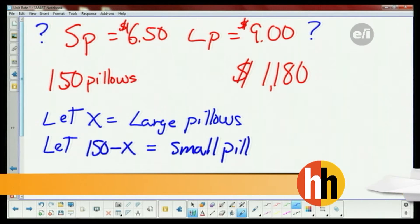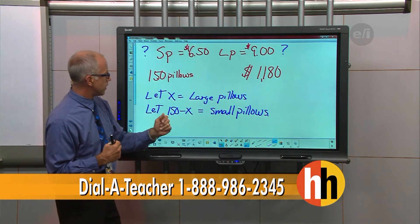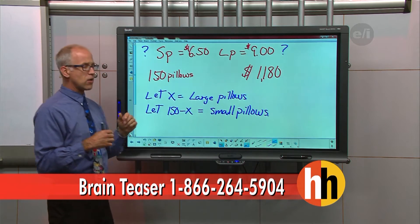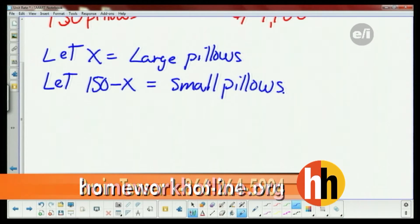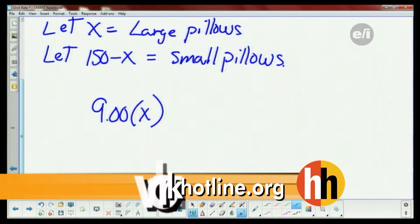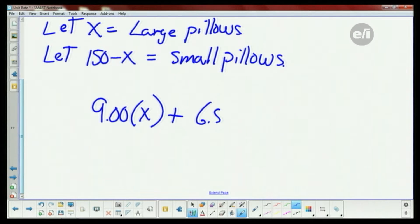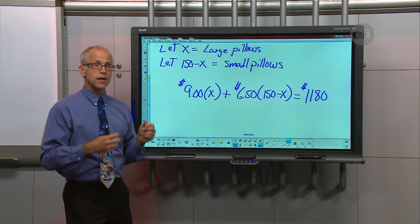This is an upper division math question. So I have: let X equal the large pillows, let 150 minus X equal my small pillows. Now I have to write an equation using the information I've got and the money we've generated. Large pillows are $9, so nine times X, plus six dollars and fifty cents times (150 minus X) equals one thousand one hundred and eighty dollars. That's the hardest part — figuring out the let statements and writing your equation.